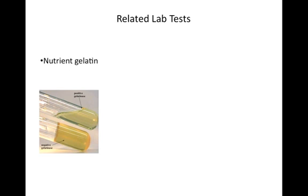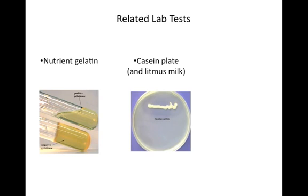If the organism did produce gelatinase, it would have liquefied the gelatin in the test tube. If it didn't produce gelatinase, the gelatin in the tube would have remained solid. The casein plate allowed us to see if an organism could digest casein. If it could, there were clear zones on the casein plate around the growing bacteria. The ability to digest casein could also be seen from the litmus milk if a curd formed and decreased in size over time, or if the indicator turned purple or blue, indicating a basic medium as a result of protein digestion and release of ammonia.